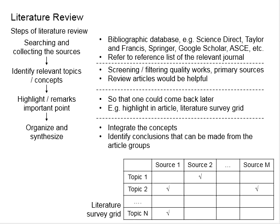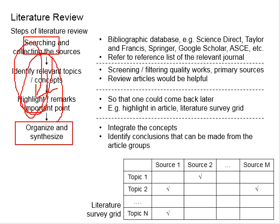For example, if you are submitting your thesis in December 2021, it would be good to incorporate reviews of papers published in 2021 as well. Therefore your database and literature review grid will increase and expand accordingly whenever there are new publications, and your review should cover up to the date of your submission. This is an ongoing looping process where you continually search, collect sources, organize, synthesize, and repeat.